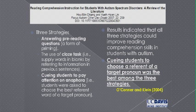O'Connor and Klein found that cuing students to choose a referent from a target pronoun is the best among three strategies in the small reading comprehension literature for autism. Reading comprehension — not word reading — is the key issue, because children with autism can be very good at word reading but many don't put the words together and comprehend them as well as they might.